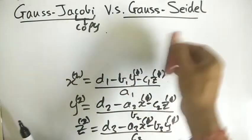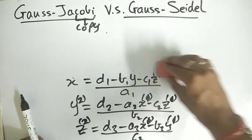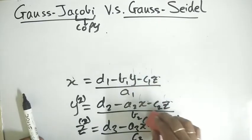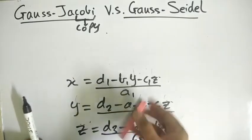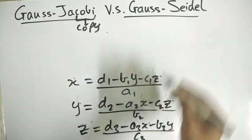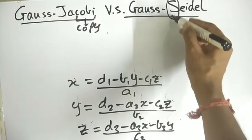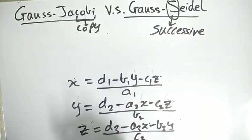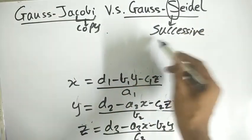Let's see what happens in the Gauss-Seidel method. So in the Gauss-Seidel method, one way to remember is because of this S. Because Seidel is S, S means successive.